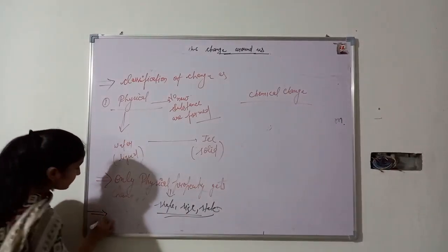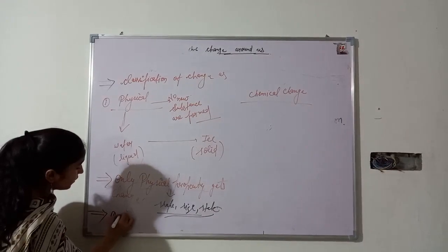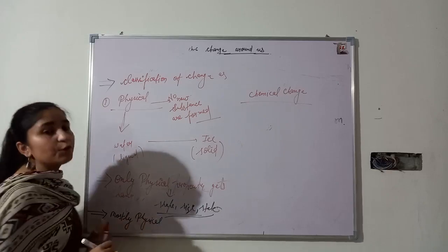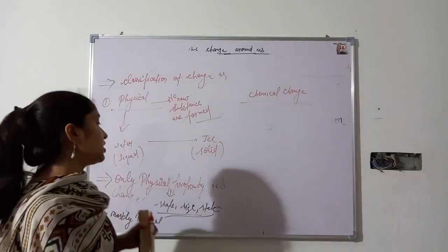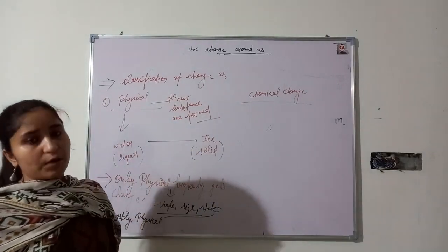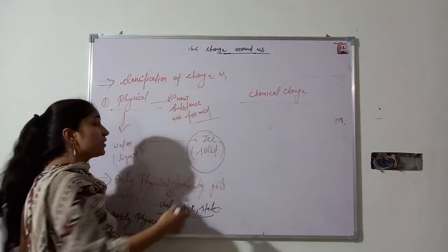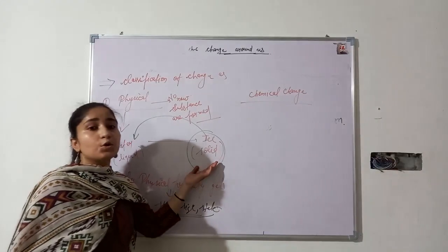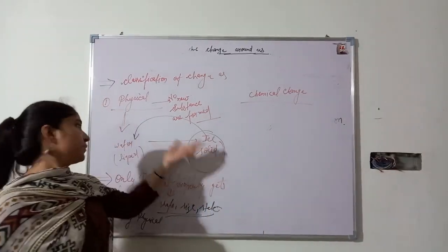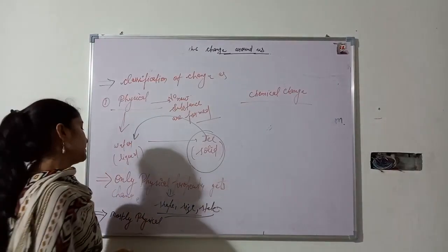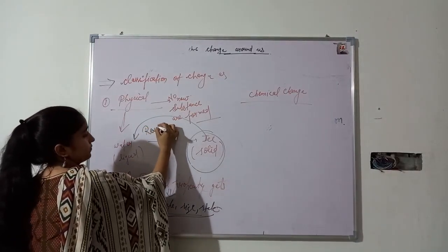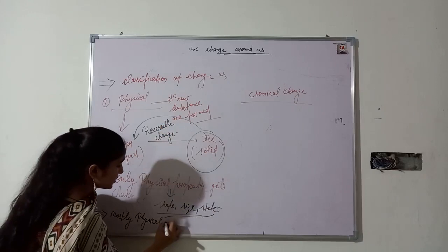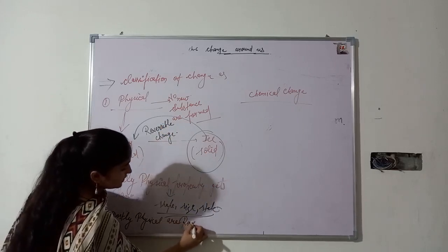Mostly, physical changes are a type of reversible change, meaning after being changed, the substance can be converted back into its original position. Can ice be converted back into its original form? Yes. When we allow ice to sit openly for some time, ice can be converted into water. So this is also a reversible change. Mostly, physical changes are reversible changes.